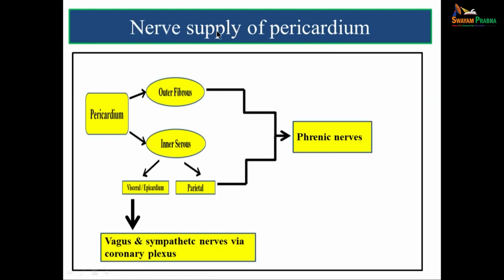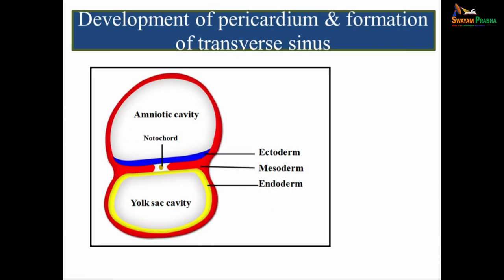The nerve supply of pericardium: the outer fibrous and parietal layer is supplied by the phrenic nerve, and the visceral pericardium is supplied by the vagus and sympathetic nerves via the coronary plexus.